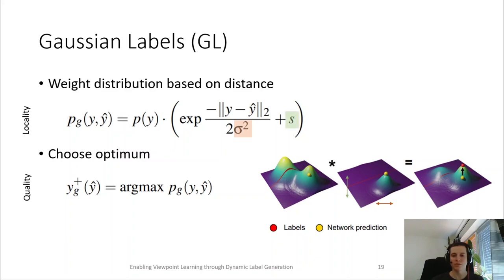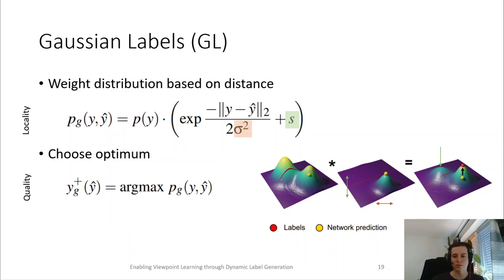Second, we introduce an offset s, indicated by the green arrow in the middle distribution, which can be used as a global offset to the Gaussian function. This ensures that distant global maxima are not discarded in the computation, which can be seen in the right distribution. This way, we ensure that if the initial network prediction is in a bad area, the network can still select a label which is rather far away.